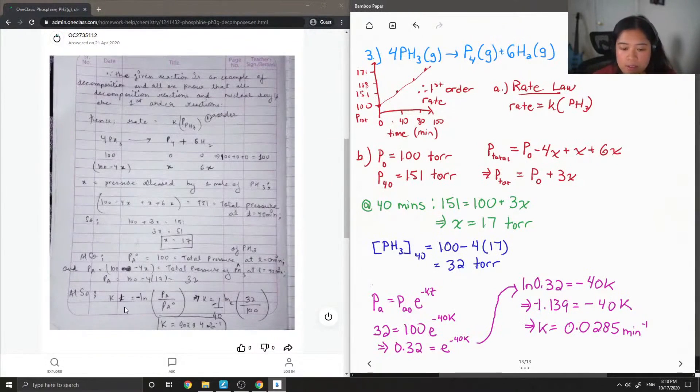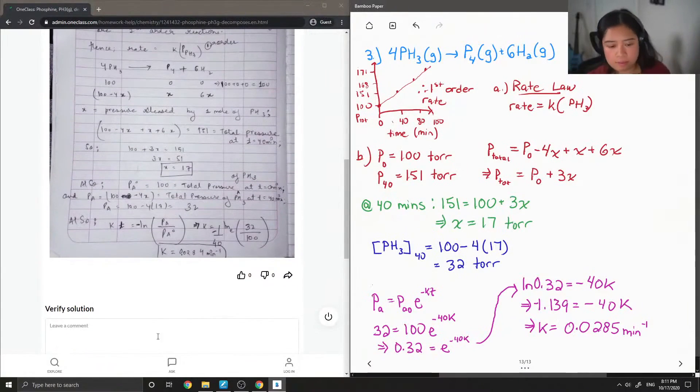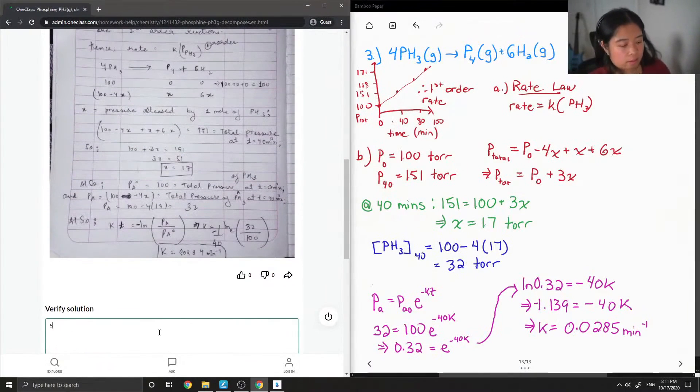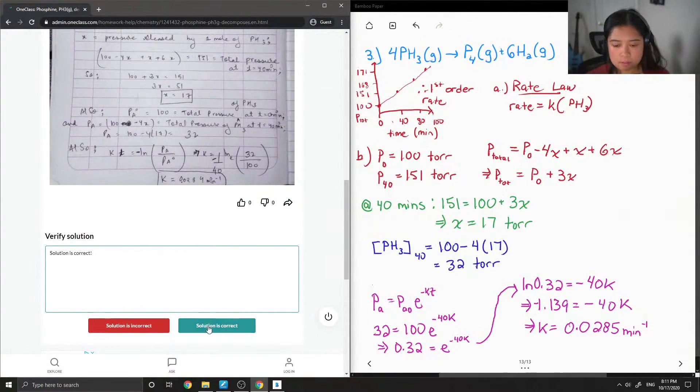So they used a different equation, but it's pretty much the same thing. Yeah, they just simplified it and then subbed in the values. And then they got the same k value of 0.0284-ish. So this solution is correct.